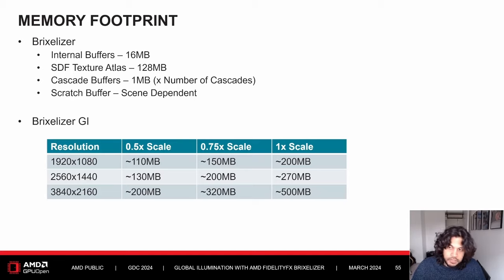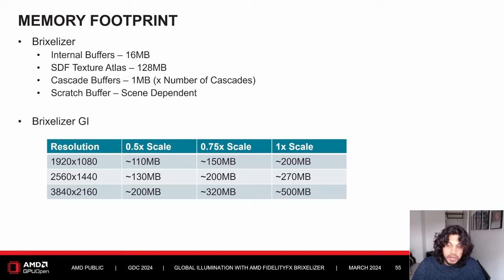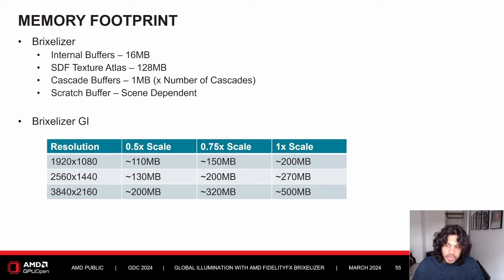As for memory footprint, Brixelizer needs around 16MB of VRAM for internal resources, about 128MB for the SDF texture atlas, and roughly 1MB per cascade. A scratch buffer for updates is also required, with its size queryable via a provided function. Brixelizer GI is resolution-dependent: at the default 0.5× scale, it takes around 110MB at 1080p, 130MB at 1440p, and 200MB at 4K.